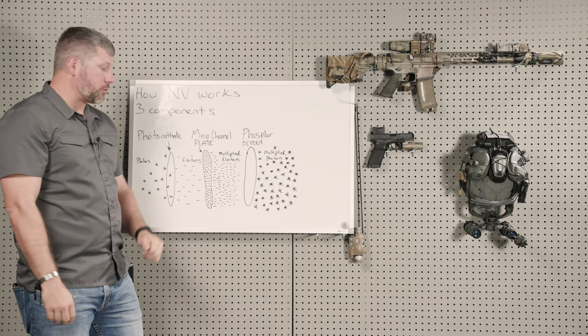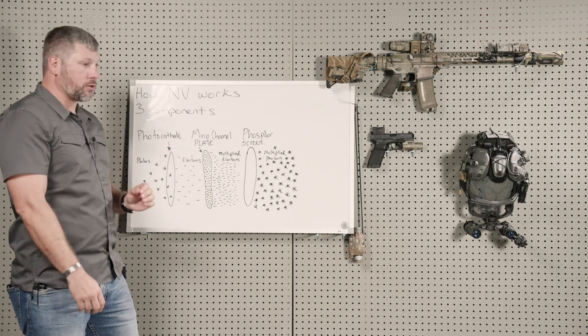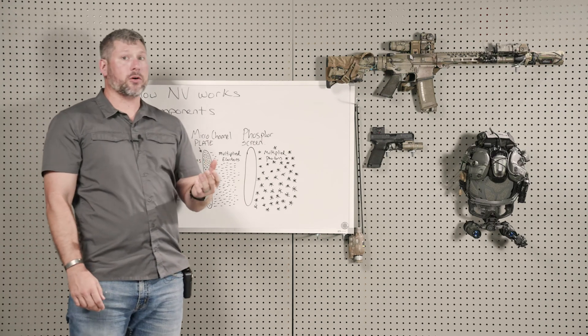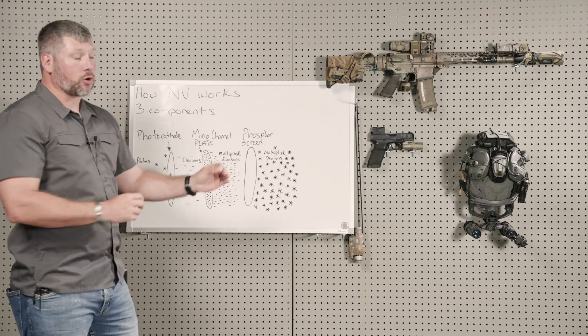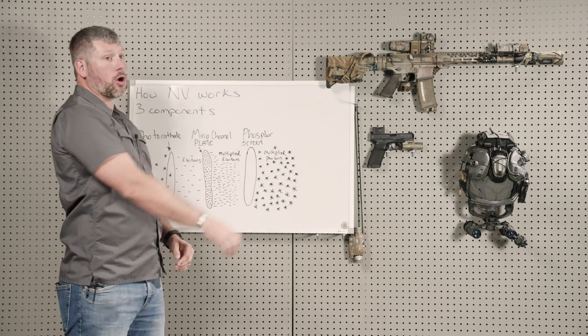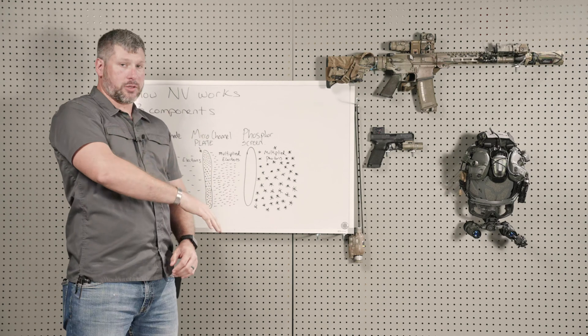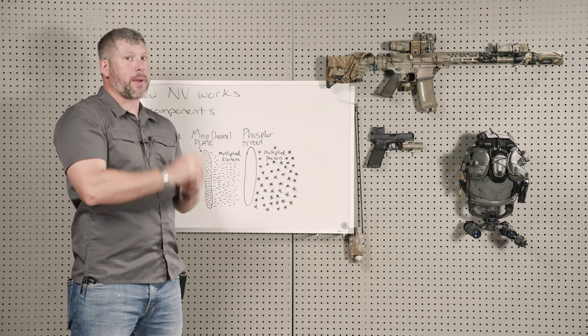Those electrons pass through the channels because the channels, and we're talking at the subatomic level, are the way they are. To an electron, those channels are very, very long. So they go into the channels, and they bounce. And every time they bounce, they multiply.